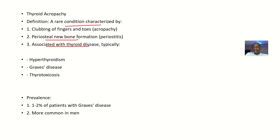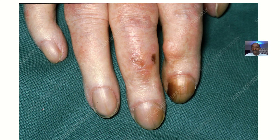It is associated with thyroid diseases, typically hyperthyroidism, Graves' disease, and thyrotoxicosis — all conditions resulting from elevated levels of thyroid hormone in the body. Prevalence is found in at least one to two percent of patients with Graves' disease, and it is more common in men. You can see how the nails appear affected.